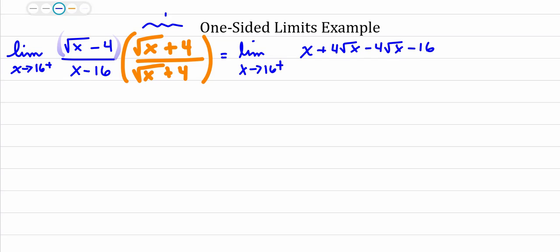And the bottom, what I'm going to do, I'm going to just leave the bottom alone in hopes that something is going to cancel. So we can already see up here that cancels. And I'm left with an x minus 16, which cancels with that on the bottom.